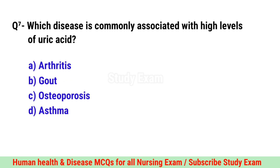Question No. 7. Which disease is commonly associated with high levels of uric acid? Correct option is B. Gout.